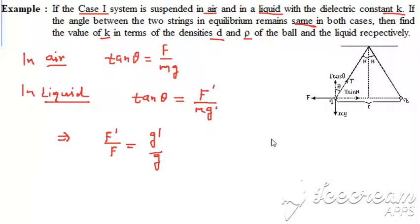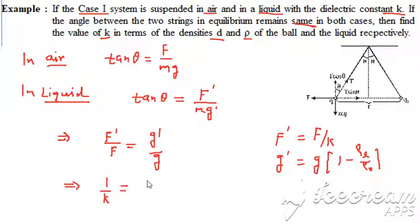And g dash will equal, in case of fluid, g in bracket one minus density of liquid divided by density of object. If we use this here, we will find it's going to be equal to F by k. That means it will result in one by k equals - g will get cancelled out - one minus density of liquid given as rho, and density of object is given as d. We can solve this to find our answer. From here we can get k. Thank you.